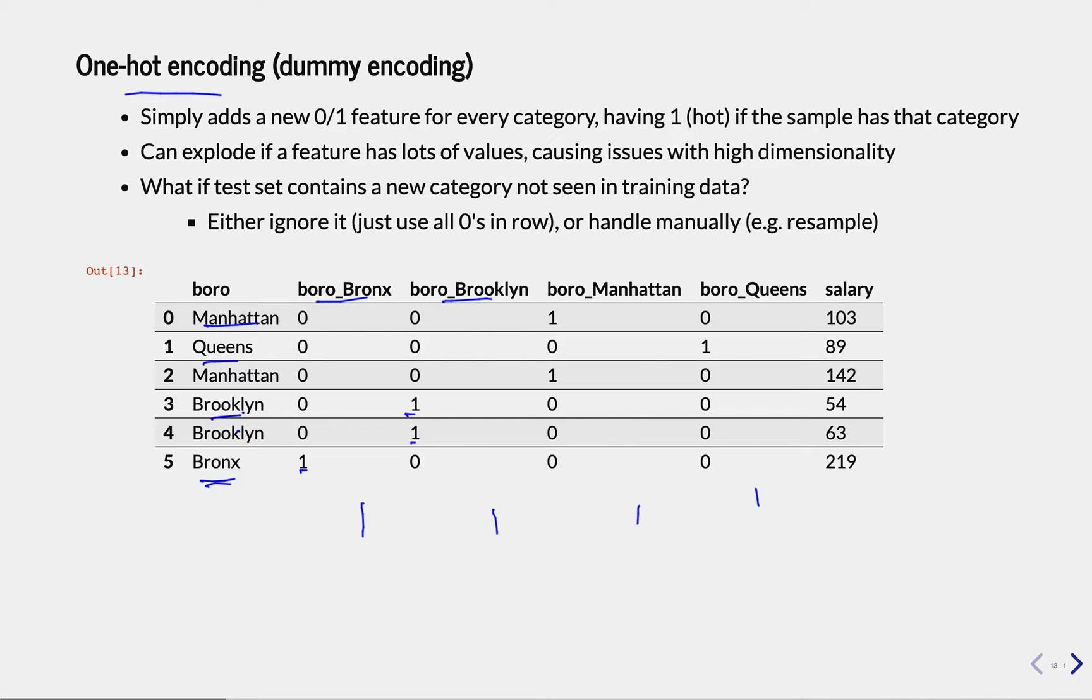So now our data is nicely numerical, and of course you remove this feature from the data after we transformed it, and now we haven't thrown away any information, and our data is numeric. So this seems very good.